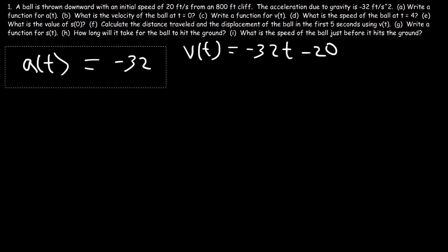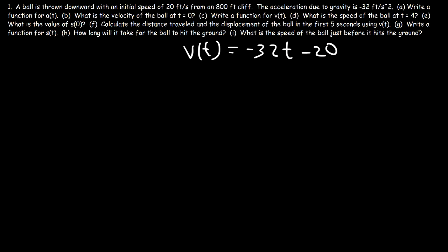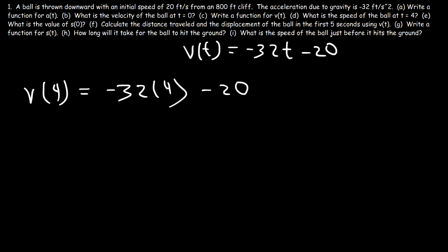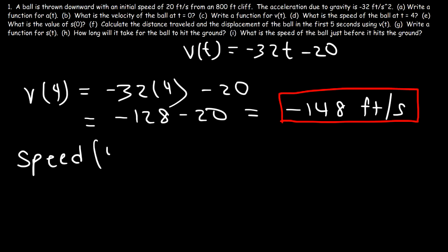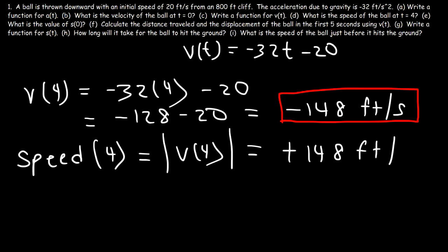We no longer need the acceleration function. For part D, what is the speed of the ball at t equals 4? We need to evaluate v of 4, which is negative 32 times 4 minus 20. 32 times 4 is 128, so that's negative 128 minus 20, which equals negative 148 feet per second. But the speed is always positive — speed is the absolute value of velocity. So the speed at t equals 4 is the absolute value of v of 4, which is positive 148 feet per second.